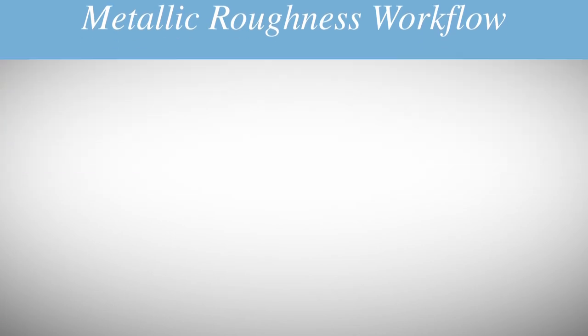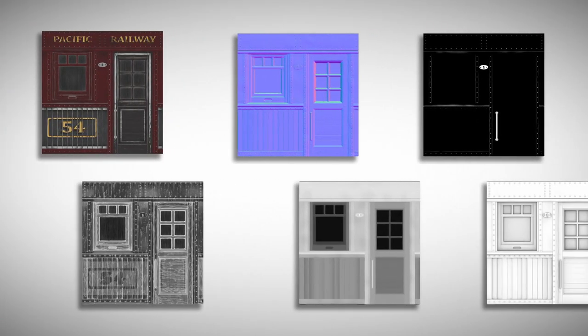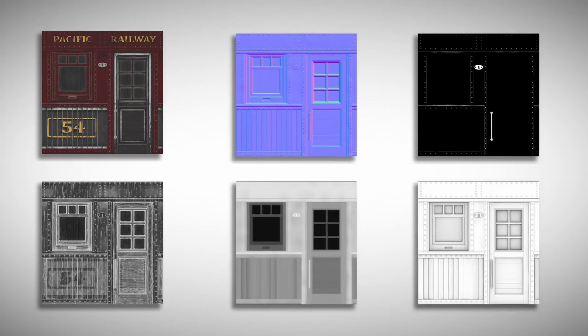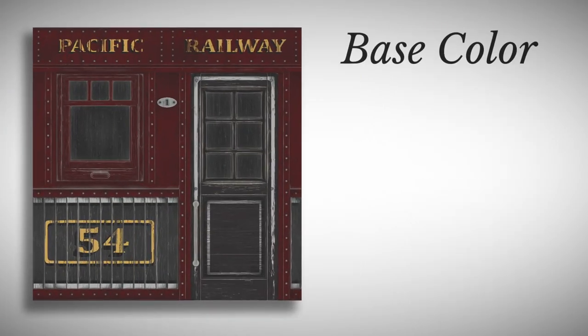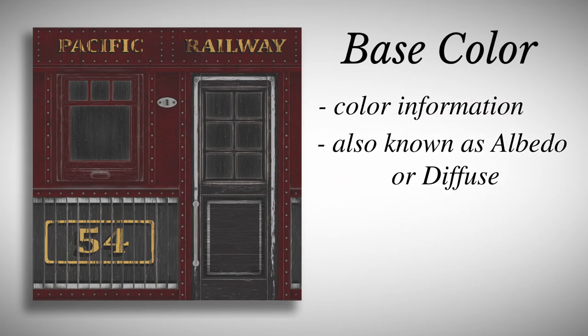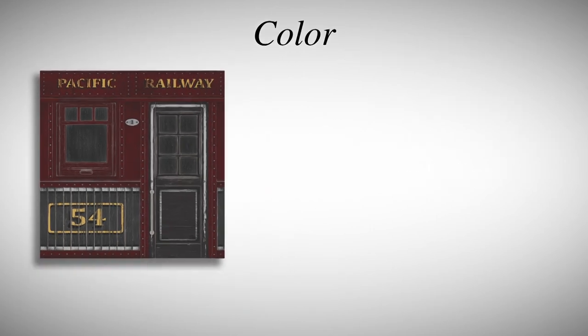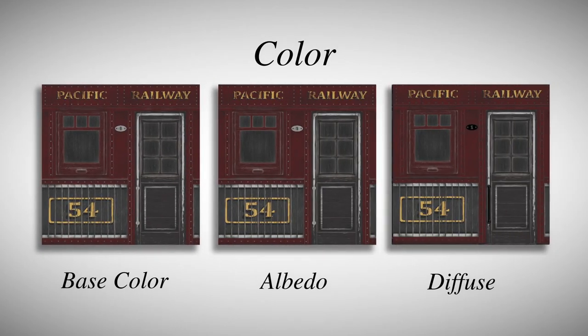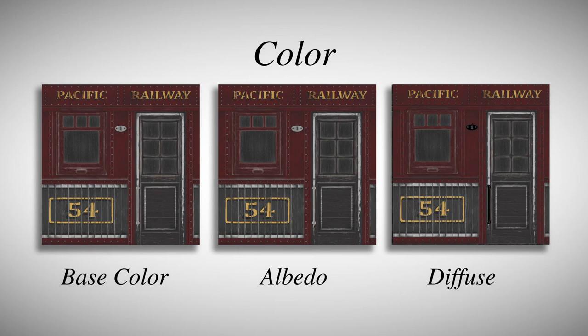There are six texture maps, each with information that adds up to form a material. Let's start with the base color. This map contains the color information of the material — it's also known as the Albedo or Diffuse map. Diffuse was the term used before PBR was implemented and generally had shadows baked into the map itself. Nowadays it's the term for the color map in the Spec Gloss workflow. They all pretty much serve the same function.